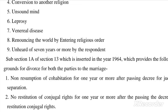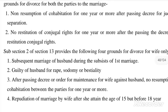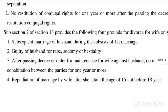Subsection 1A of section 13, inserted in 1964, provides the following grounds for divorce for both parties: non-resumption of cohabitation for one year or more after passing a decree for judicial separation; and no restitution of conjugal rights for one year or more after passing the decree for restitution. Subsection 2 of section 13 provides the following four grounds for divorce only for the wife: subsequent marriage of the husband during the subsistence of the first marriage; the husband being guilty of rape, sodomy, or bestiality; after passing a decree or order for maintenance for the wife against the husband, no restitution of cohabitation for one year or more; and repudiation of the marriage by the wife after she attained the age of 15 but before 18 years.